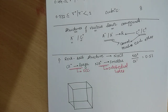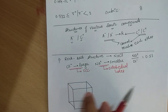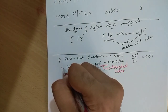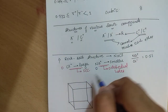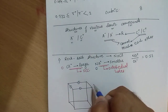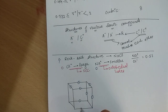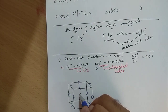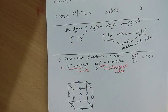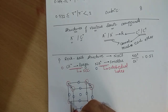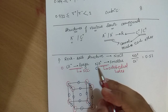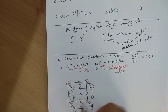Octahedral holes are present at the edge centers and at the cube center. In the FCC structure, Cl⁻ ions are present at all corners. Let me draw Cl⁻ ions using a red pen and Na⁺ ions using a blue pen. So drawing Na⁺ ions: 1 through 12 plus one at the center. The Cl⁻ ions forming the FCC structure are at the corners — 1 through 8 — and at the face centers — 1 through 6.